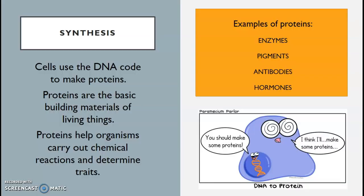The first STRINGER life process that you will learn about is synthesis. Synthesis means to make. One example of synthesis is protein synthesis — cells use the DNA code to make protein.